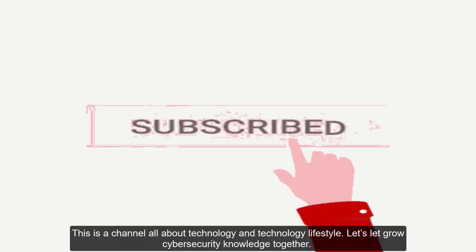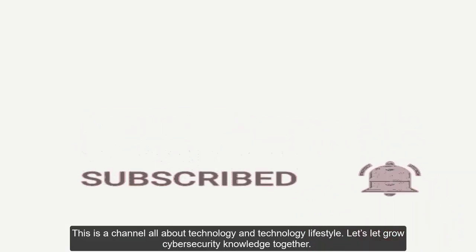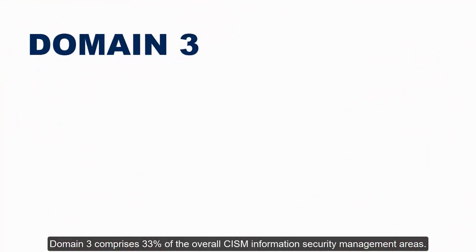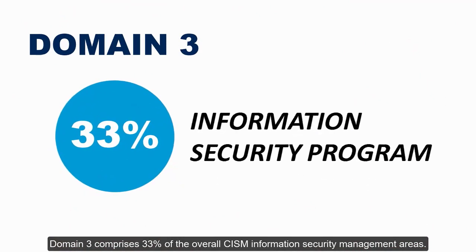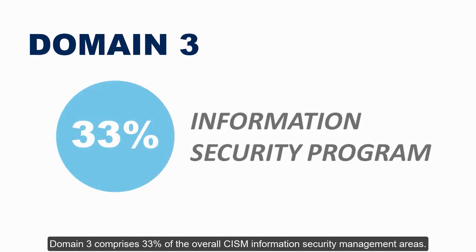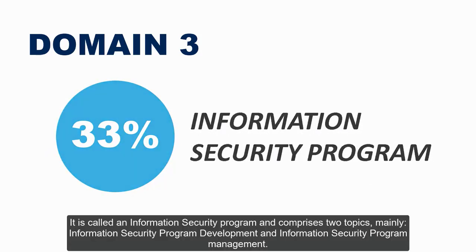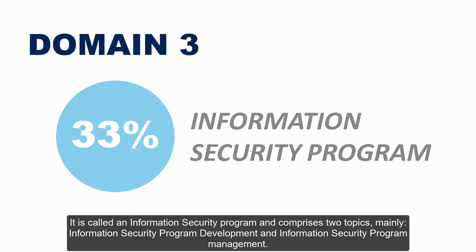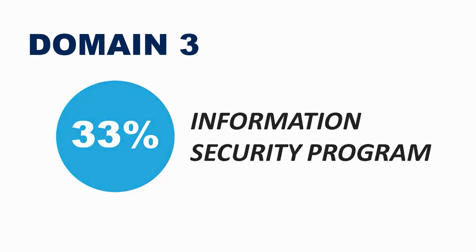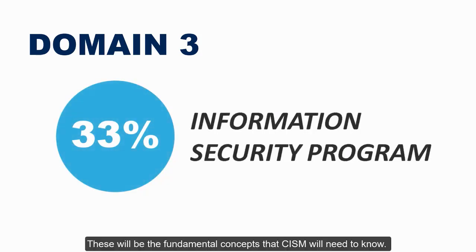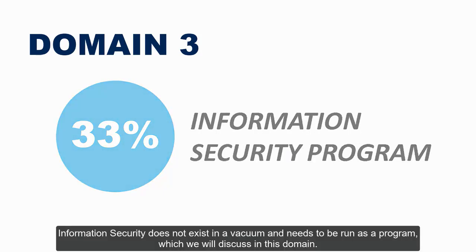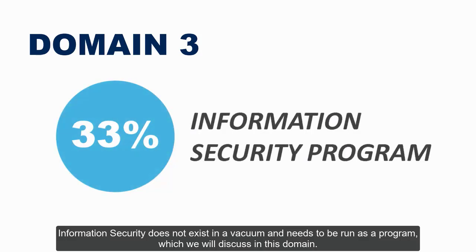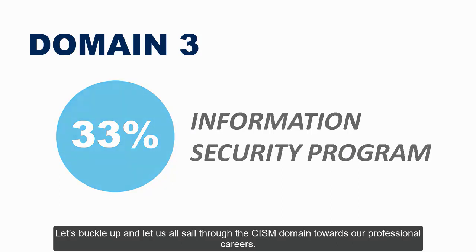Domain 3 comprises 33% of the overall CISM information security management areas. It is called the Information Security Program and comprises two topics: information security program development and information security program management. These will be the fundamental concepts that a CISM will need to know. Information security does not exist in a vacuum and needs to be run as a program, which we will discuss in this domain.